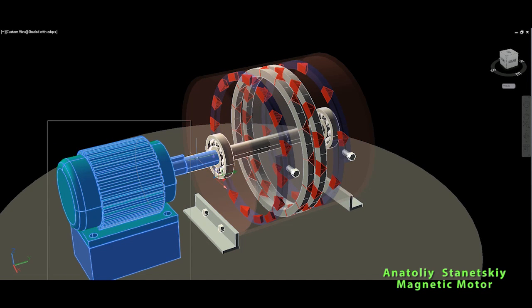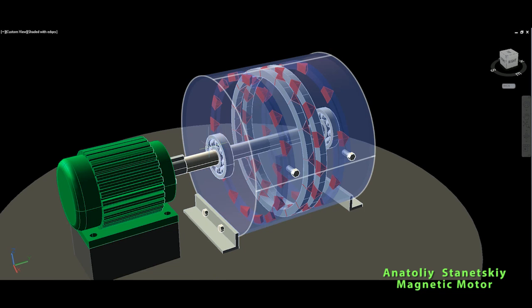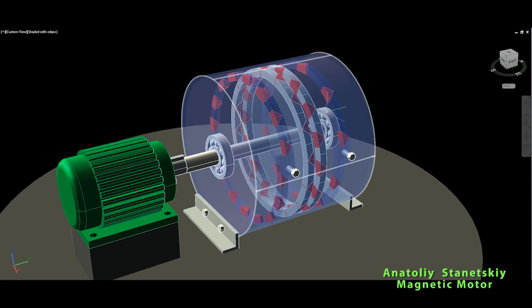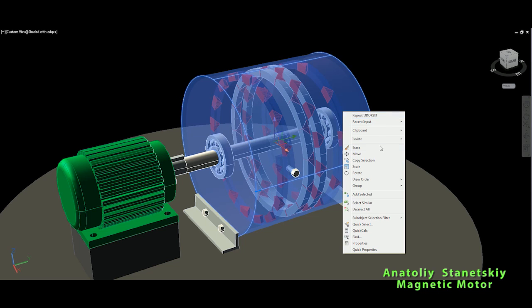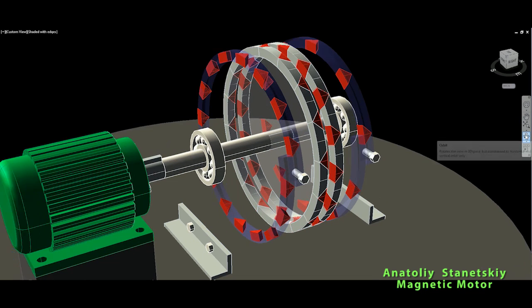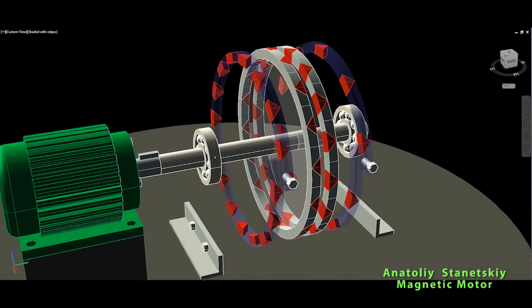So this here, not to waste any time, this is our standard generator which will through the main shaft produce our free energy from the magnetic motor. And you can see now, basically we have two stators and one rotor in our magnetic motor assembly. So let me hide the housing so that we can select the stator and rotor separately.